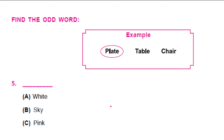Can you guess the odd one in question 5? White, sky or pink? You're right — sky is the odd one because white and pink are colors.